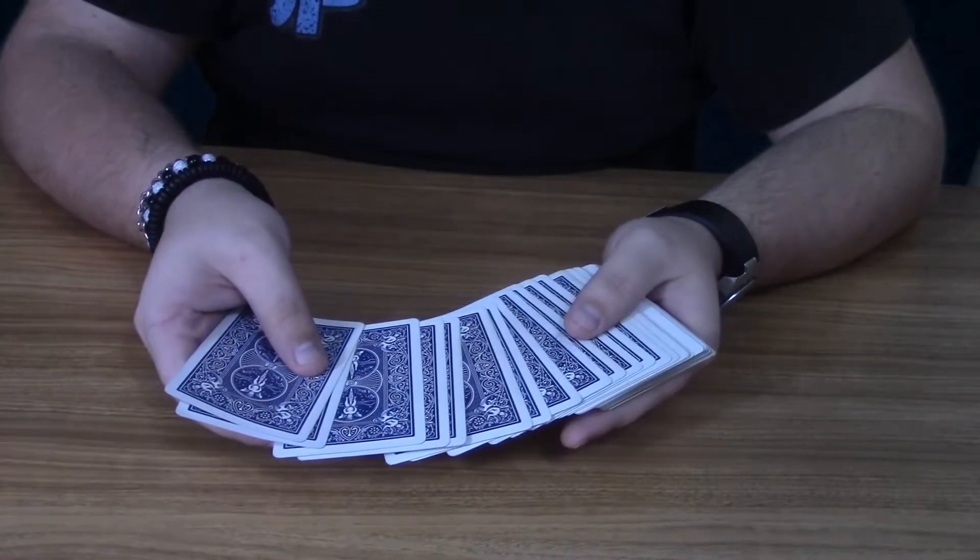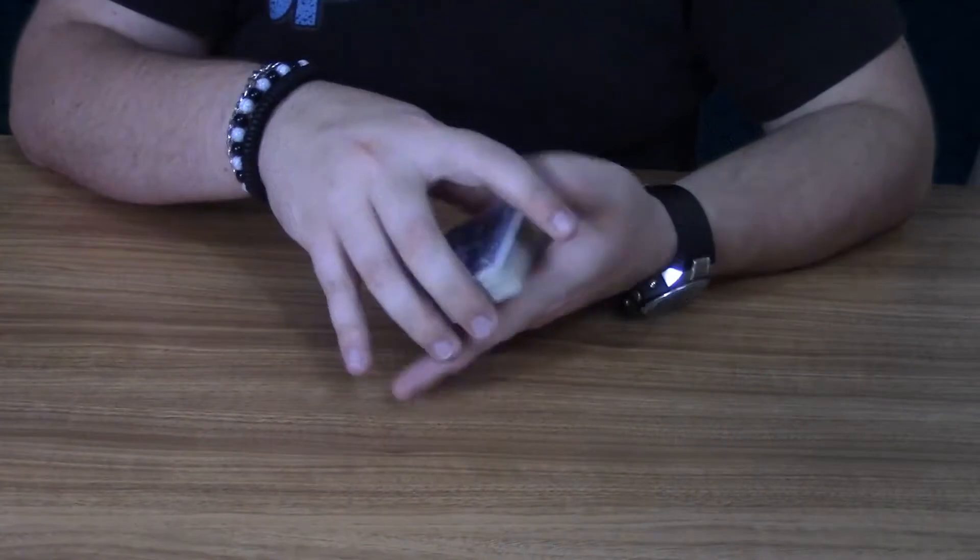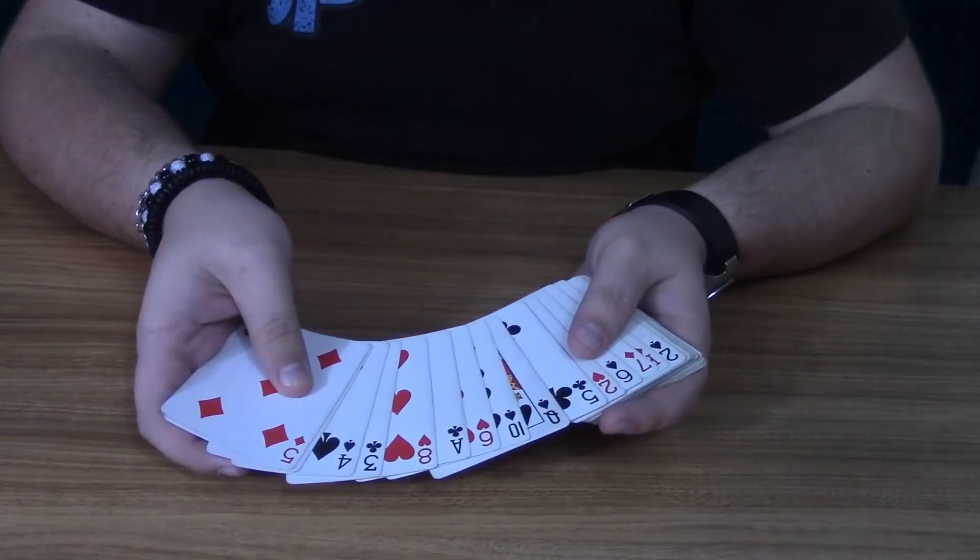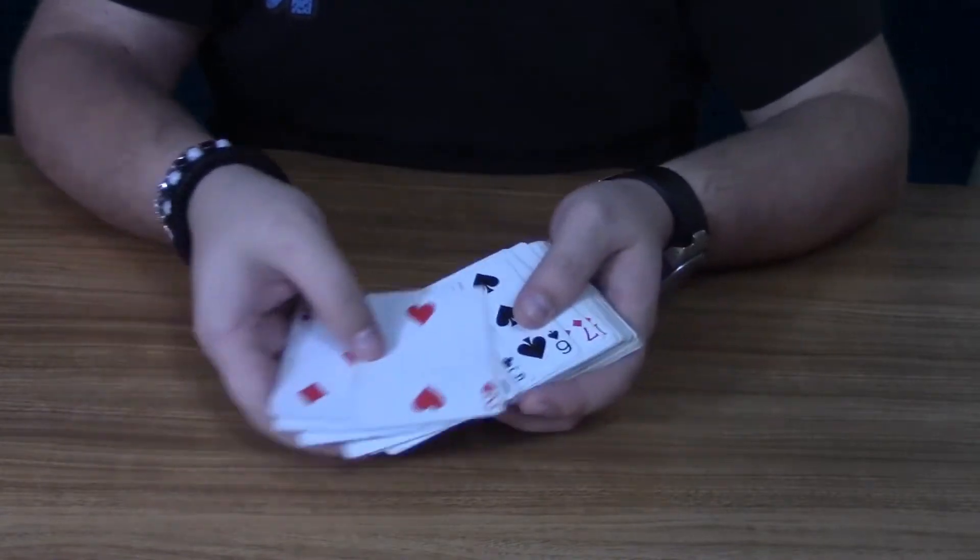So normally you would have someone pick a card like this, right? But we're not going to do that. This time I'm actually going to let you see the card. So let's say they chose the two of hearts. We take the two of hearts, place it on top,